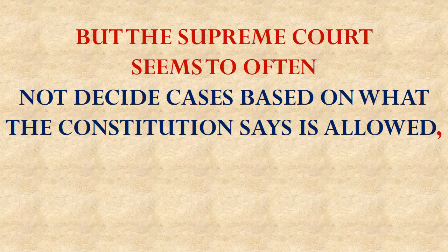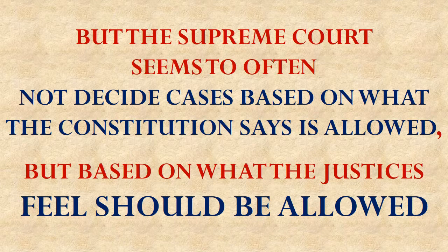But even though those are the standard roles for those branches, it sure seems like the Supreme Court doesn't actually decide its cases based on what the Constitution really allows. Instead, it seems like they decide cases based on what they feel should be allowed. So they would get a case about same-sex marriage, and the justices look in their own hearts and ask, do I think that homosexual couples should be able to marry? When they're making decisions based on what's in their heart, they're deciding based on what they think should happen rather than what the Constitution says can happen.